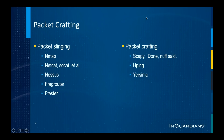For packet crafting, we have two basic categories: packet slinging and packet crafting. Packet slinging refers to tools that will craft packets on your behalf and send them out. Nmap is a classic example — we know it as a network exploration tool, but you can specify TCP flags and UDP packet sizes and payloads, so it does craft packets on your behalf and also sniffs packets on the return. Netcat, Socat, and all their derivatives are great tools for sending, redirecting, and proxying packets.